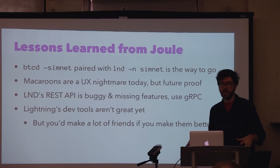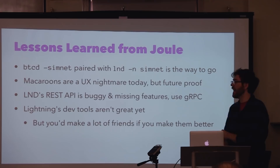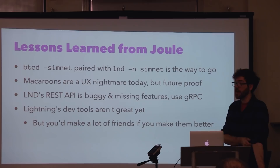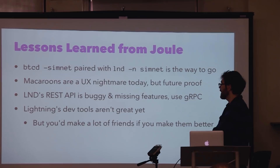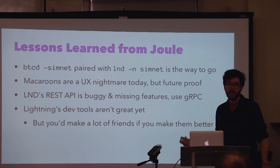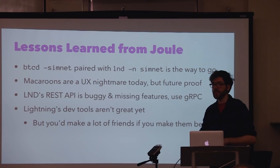LND's REST API is awful. I appreciate that it exists, but it is not taken care of at all. So if possible, use gRPC. If not possible, still use gRPC — set up a proxy or something. Really do not want to use that REST API. I have filed issues for everything I've found, so maybe it'll get better. The dev tools aren't really great yet. A lot of these problems were compounded by the fact that the API comes back with totally untyped errors, and to spin up multiple nodes and make channels with them, you have to do all of that manually — like 20 console windows open. The dev tools aren't great yet, but I bet you would make a lot of friends in this room if you wanted to make them better.